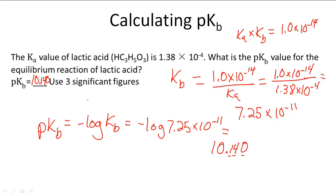We can also verify this by converting Ka to pKa and using the relationship pKa plus pKb equals 14. Subtracting the pKa from 14 gives pKb, and we would end up with 10.140 as the answer again.